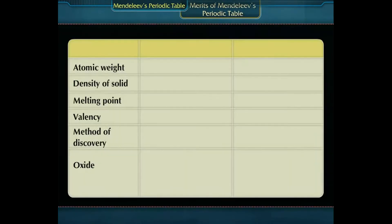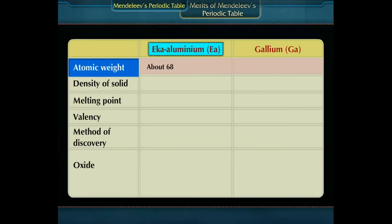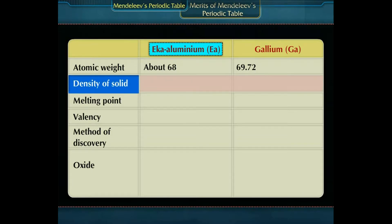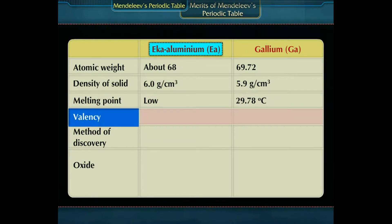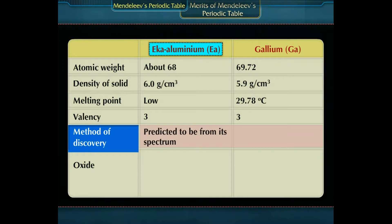Comparing the predicted element Eka-Aluminium (Ea) with the discovered element Gallium (Ga): the atomic weight of Eka-Aluminium was about 68, and that of Gallium is 69.72. The density of Eka-Aluminium was 6.0 g/cm³ and that of Gallium is 5.9 g/cm³. The melting point of Eka-Aluminium was predicted to be low, and Gallium's melting point is also quite low at 29.78°C. The valencies of both Eka-Aluminium and Gallium are the same — that is 3. The method of discovery for Eka-Aluminium was predicted to be from its spectrum, and Gallium was indeed discovered spectroscopically.